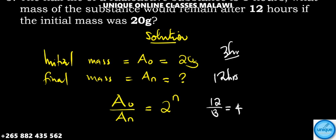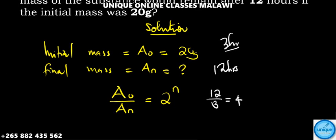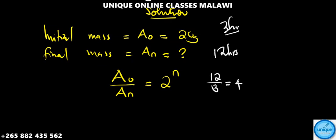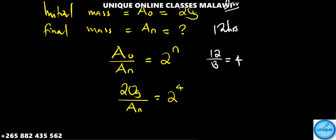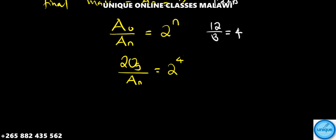Now we substitute: 20 grams divided by Aₙ equals 2 to the power 4. Two to the power four equals 16, so we have 20 grams divided by Aₙ equals 16.